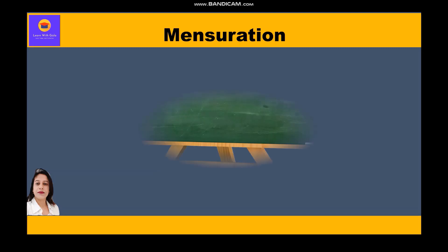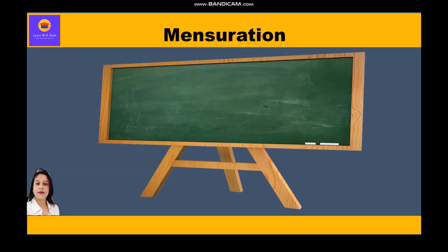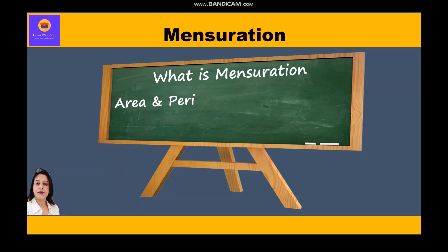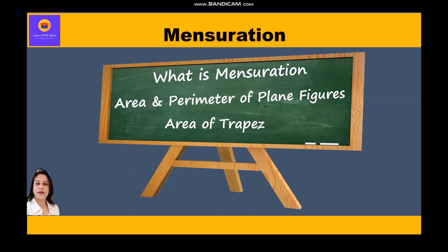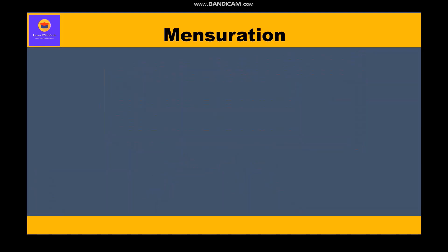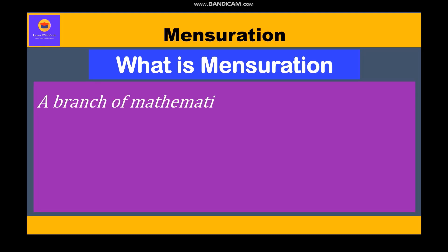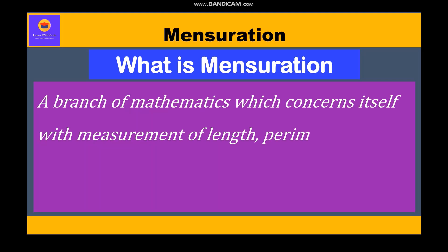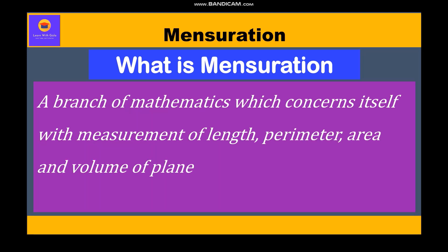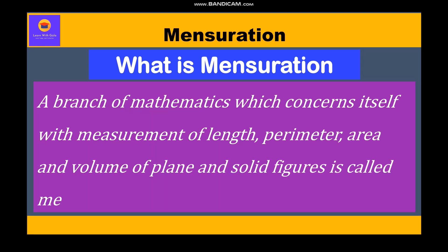In this video on mensuration, we are going to study what is mensuration, area and perimeter of some plane figures, and how the area of a trapezium is derived. Mensuration is a branch of mathematics which concerns itself with measurement of length, perimeter, area, and volume of plane and solid figures.